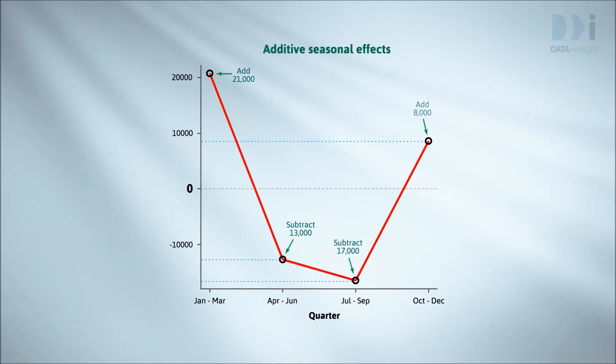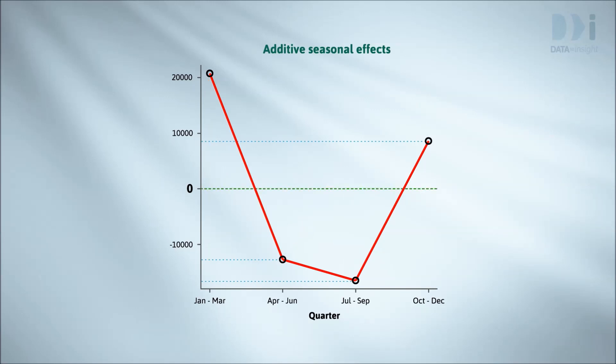We can also look at differences between quarters in the obvious way. For example, we expect a January to March quarter to have about 21 plus 13, which equals 34,000, more visitors from the US than the April to June quarter. Note the horizontal line on this plot at zero. The seasonal terms are up or down adjustments to be made to the trend. Zero is the no-change value because adding zero makes no change. We'll need this idea later when we contrast additive and multiplicative seasonal effects.